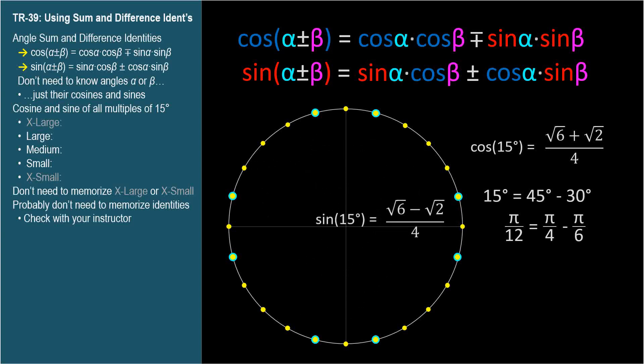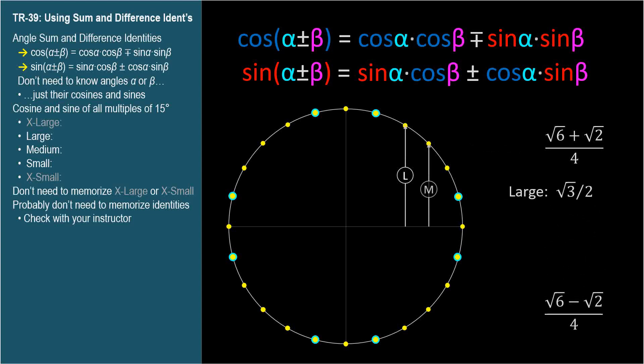So we've kind of supplemented our unit circle model having large, medium, and small values for the cosine and sine of common angles. Theoretically, we now have this longer distance and this shorter distance for angles 15 degrees on either side of a quadrantal angle. I don't think you need to memorize these, I'm just showing you how they fit in and compare to large, medium, and small.